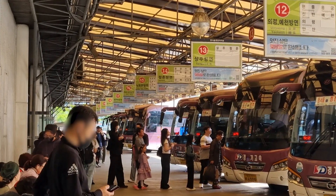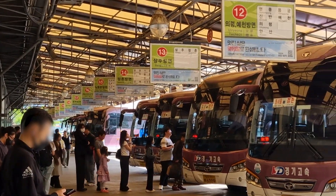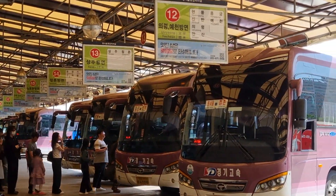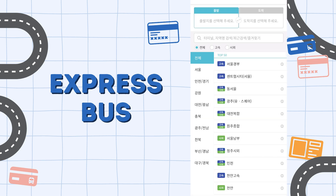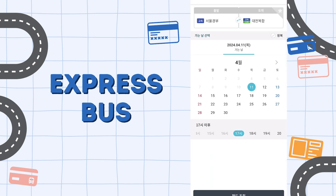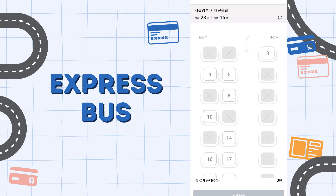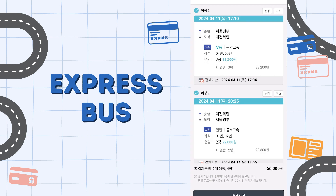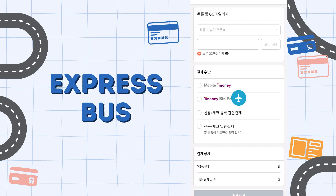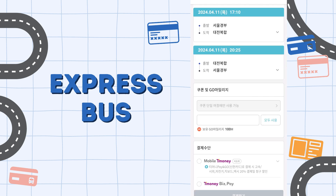The express bus ticket can be purchased via the T-money app. Click on 고속·시외 통합 예매 and select your departure and arrival bus terminal. Next, select the date and time, then select your seats. Finally, after all seats have been selected, click 결제하기 to make your payment.